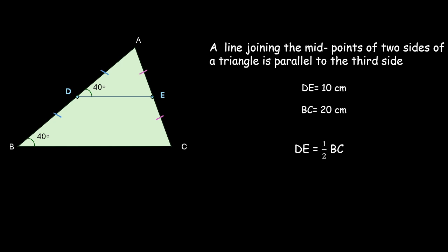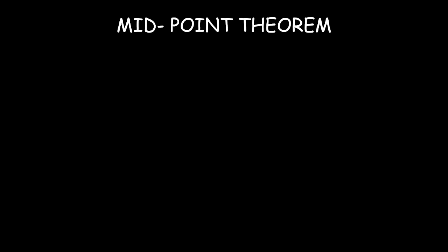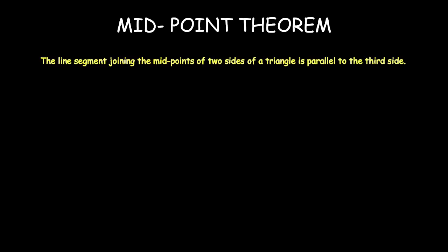That's another good result. The question is, is this going to be true for every triangle? Yes. This will be true for every triangle, and that is what the midpoint theorem is. The midpoint theorem states that the line segment joining the midpoints of two sides of a triangle is parallel to the third side. Although we just verified it by manually taking a triangle and measuring sides and angles, let us prove it mathematically too.